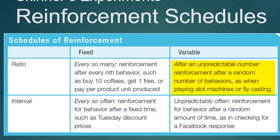A variable ratio means an unpredictable number of responses is required. Like a baseball batter who's a .300 hitter — he gets a hit three out of every ten at-bats, but it varies unpredictably. Slot machines operate on variable ratio schedules too: they pay off after a certain number of pulls on average, so people are afraid to walk away. Fishing works the same way — cast one more time and you might catch that fish.